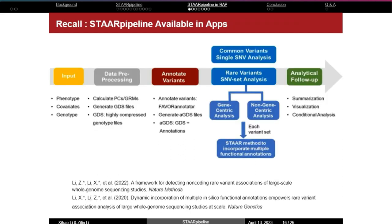Now I will leave the floor to Jihao, who will talk about the implementations of the STAR pipeline in RAP. Thanks, Xilin. Thanks, Ben, for inviting me. Given the time limit, I would like to give a very brief overview of the implementation of the STAR pipeline based on the UK Biobank RAP on DNA Nexus. From a RAP user's perspective, we start from the input of phenotype, covariate, and phenotype files, followed by data preparation steps and variant annotation, and then STAR pipeline provides single-variant analysis for common variants and variant set analysis for rare variants, as well as analytical follow-ups.